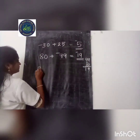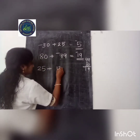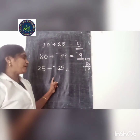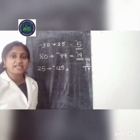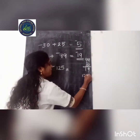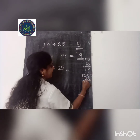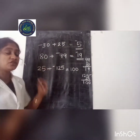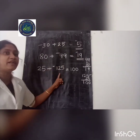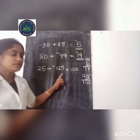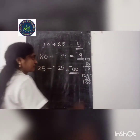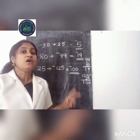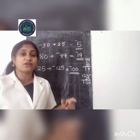One more problem: 25 plus negative 125. Both numbers have different signs, so we subtract: 125 minus 25 equals 100. We check the greatest number, which is 125, and its sign is negative. So the answer is negative 100. The third rule is: if we add 2 different sign numbers, first subtract them, then give the sign of the greatest number.